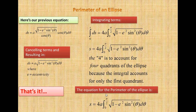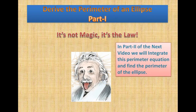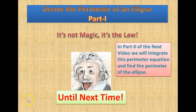This is the end of our derivation of the ellipse perimeter equation. In part 2 of the next video, we will integrate this perimeter equation and find the perimeter of a specific ellipse. Until next time.